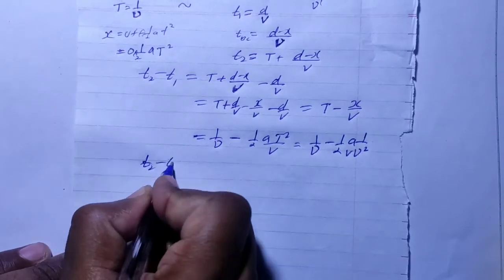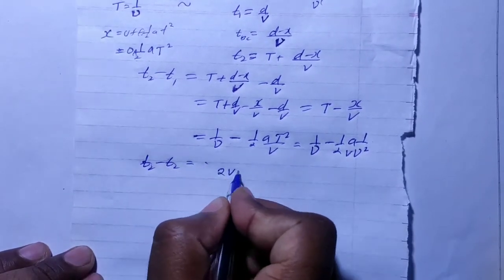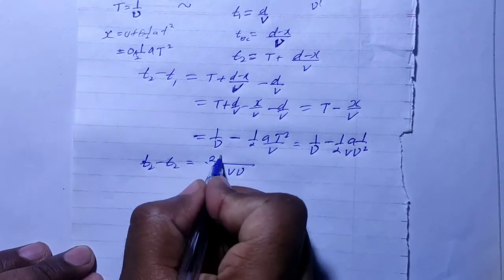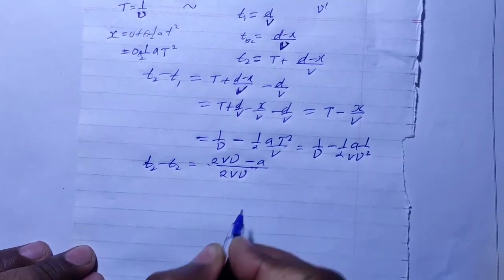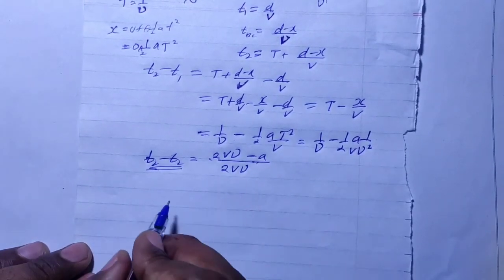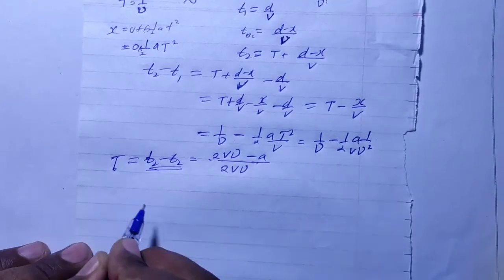The time difference between two consecutive pulses is the time period as observed. So the observed frequency is one divided by the observed time period — it is the reciprocal of (T minus x/v), giving the final answer as the observed frequency ν' = 1/(1/ν − A/(2ν²v)).